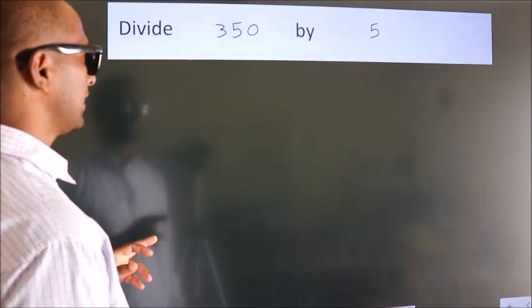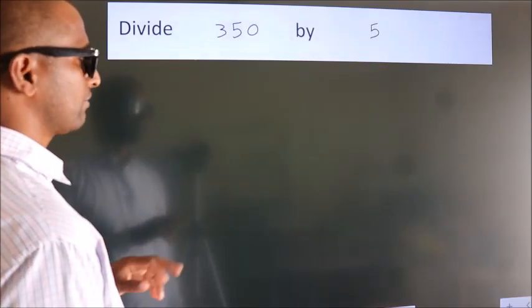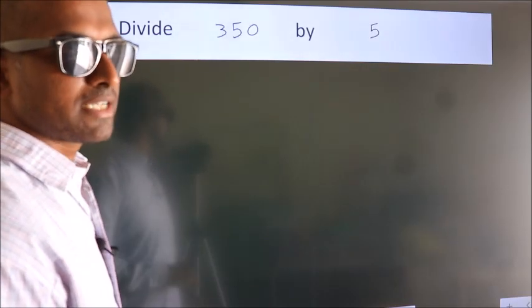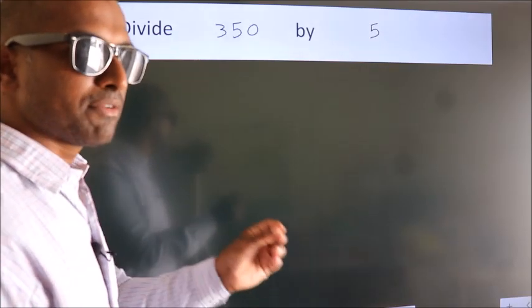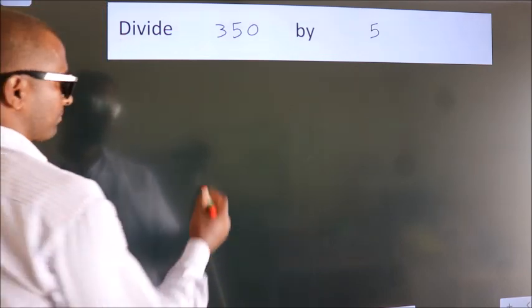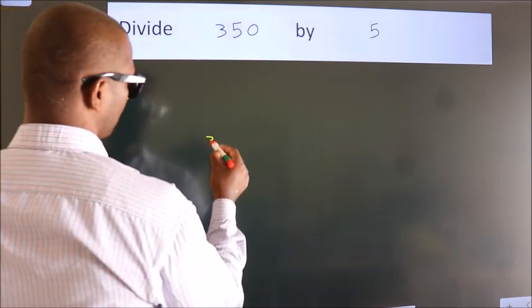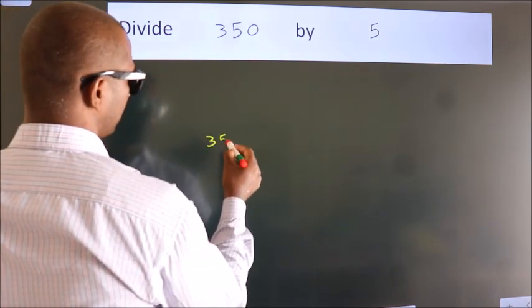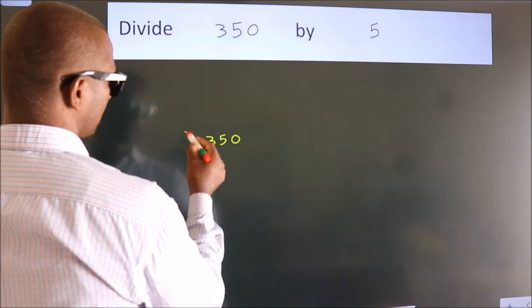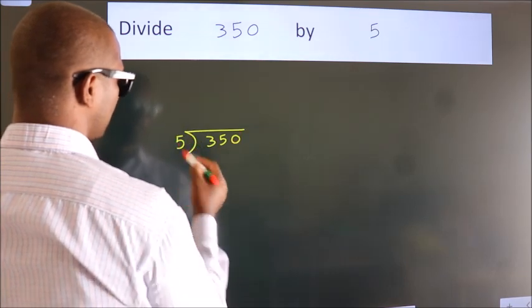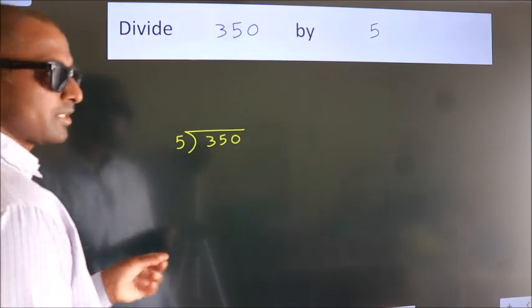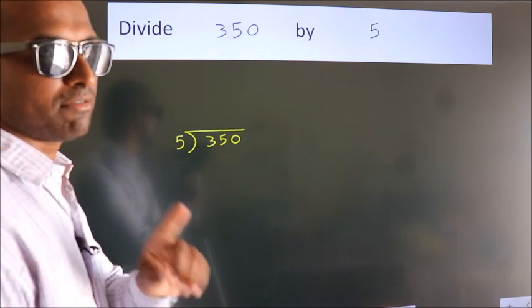Divide 350 by 5. To do this division, we should frame it in this way: 350 here, 5 here. This is your step 1.